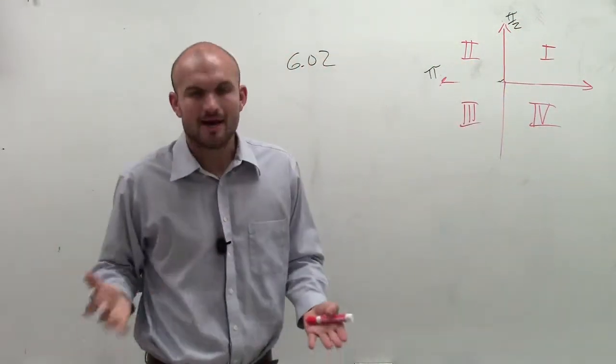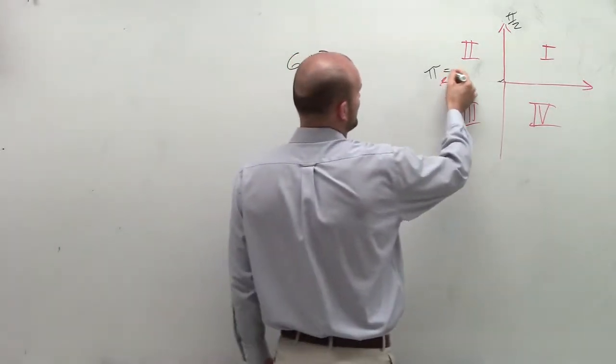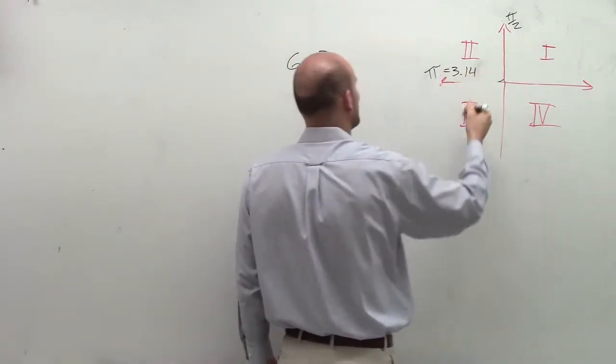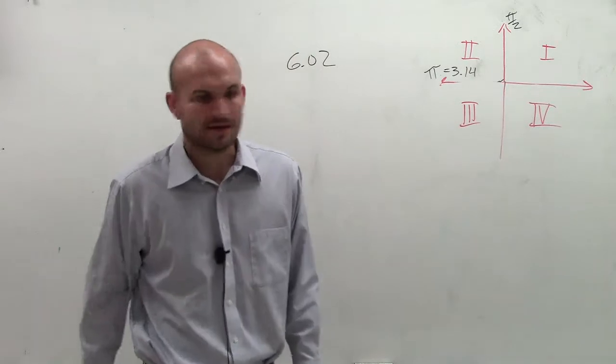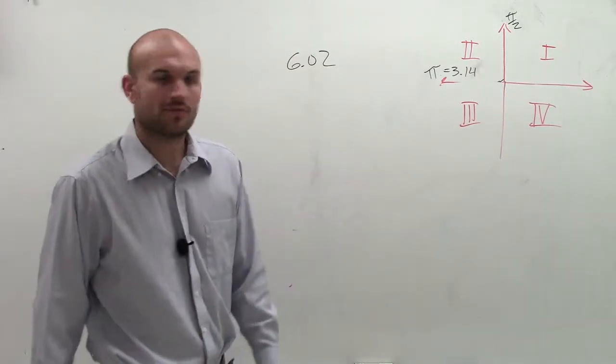Now remember pi, I'm just going to approximate pi for right now. We can represent pi as 3.14159 and so on. But let's just approximate it for 3.14.